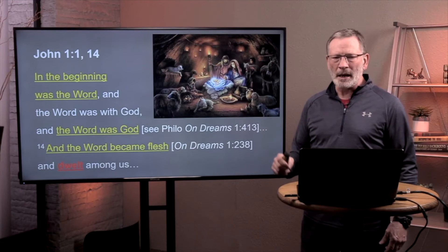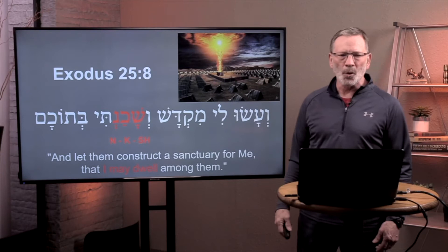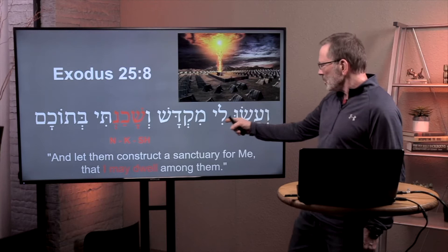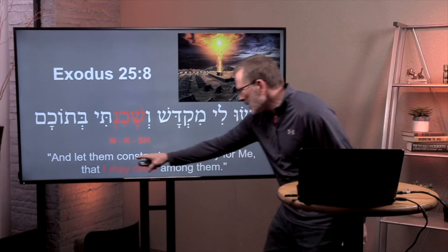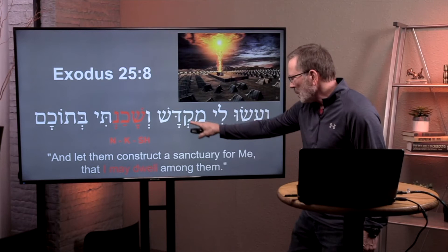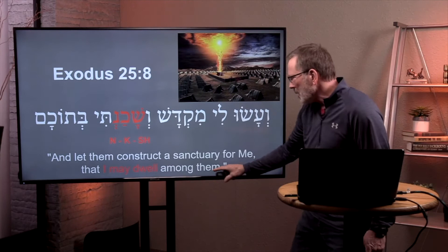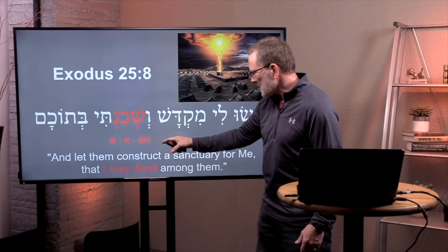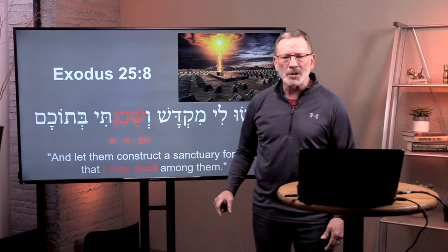Let me suggest we take a look for its origins. Back at this passage we looked at last session — Exodus 25 — where God says to Moses: 'Let them construct a sanctuary, a mikdash, a holy place for me, so that I might dwell among them.' I've put in red letters this root, 'shachan.' I've even written it in Hebrew — and remember you read Hebrew in the opposite direction from English — so it's S-H-K-N.